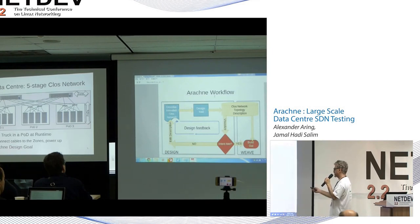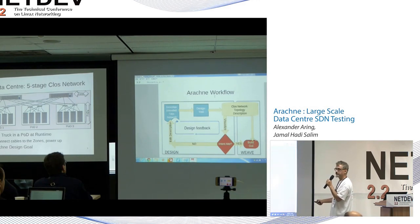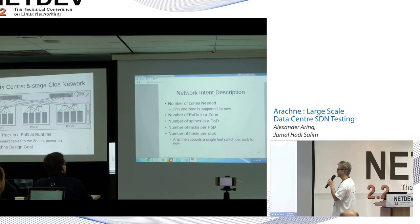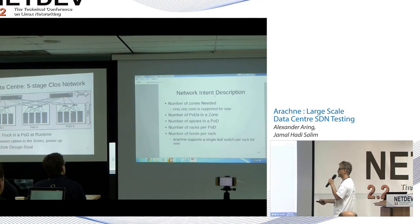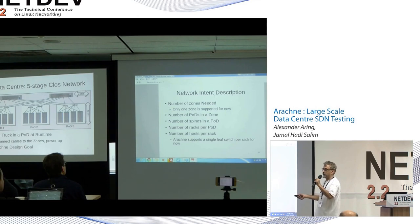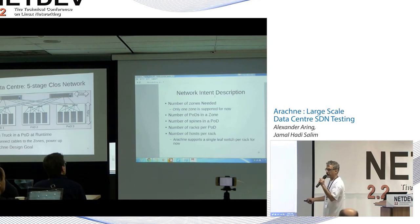You proceed to review your design until you're happy, and then you say 'weave.' When you weave it, it goes over and deploys it. You describe your network with parameters: how many zones, how many pods, how many spines per pod, how many racks, hosts per rack. At the moment we only support one single leaf, but it's not a challenge to do multiple — we've just never needed it. There's absolutely no reason why you can't take the output of that design and go configure real hardware.